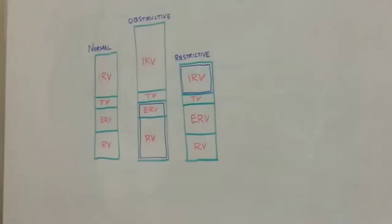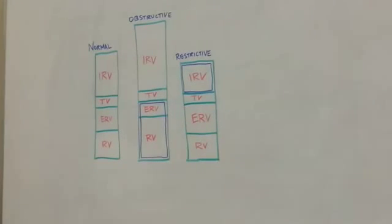You see this type of pathology in conditions like fibrosis of the lungs, spinal deformities, pregnancy, myasthenia gravis, and other neuromuscular problems as well.